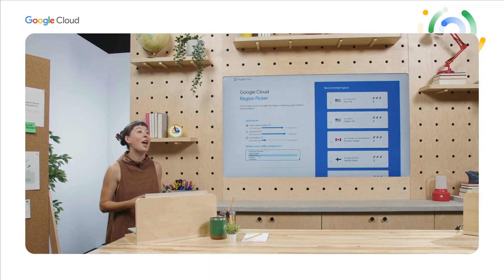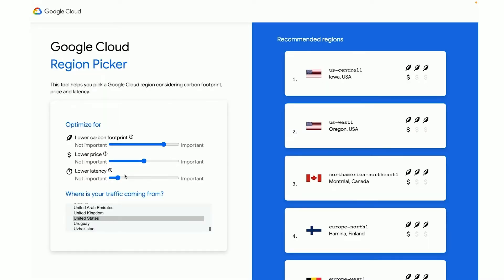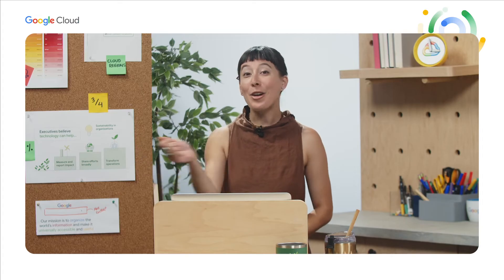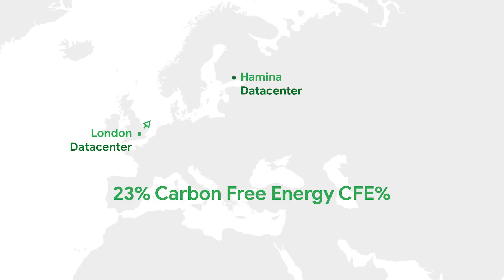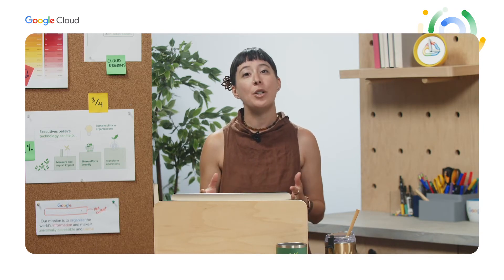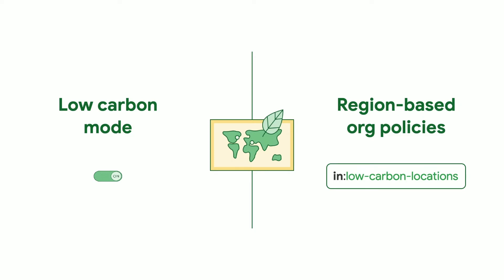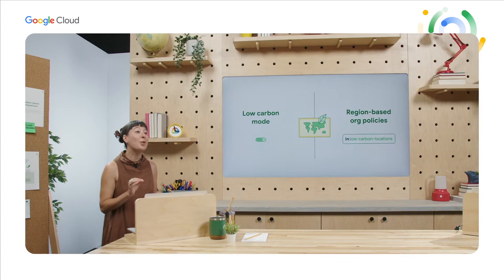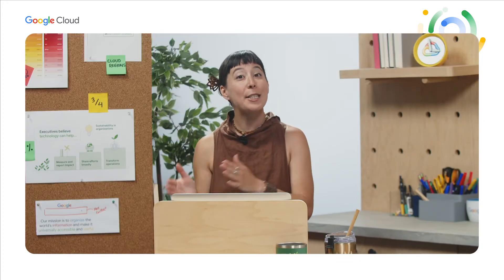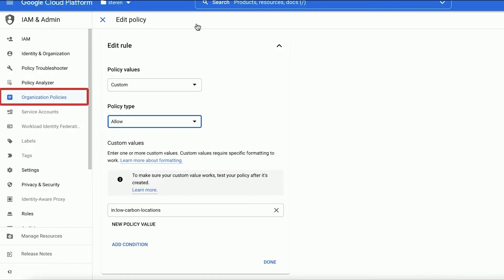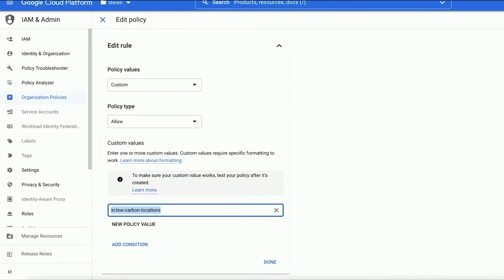If you are looking for proactive advice on what regions to use, there's also the fantastic Region Picker tool that helps you compare priorities around lowering emissions versus pricing versus latency. For example, you can learn that by moving a workload from London to Finland, you can increase the carbon-free energy percent by 23% and lower the price by 14%. If your organization provides users with the choice to select cloud regions, you can set organizational policies to restrict locations to low carbon-intensive regions using low carbon mode, or allow/deny specific regions in the policy value box when configuring the resource location restriction.